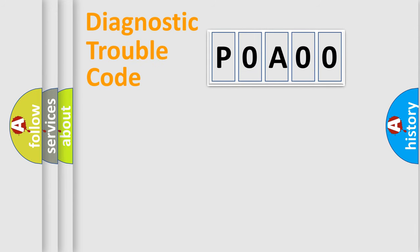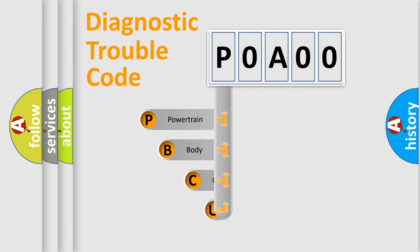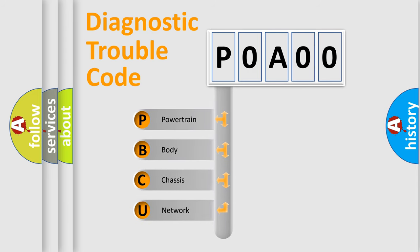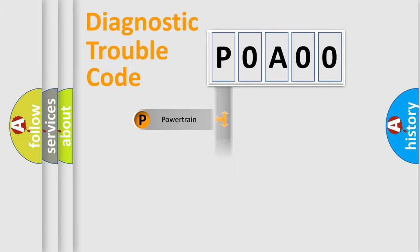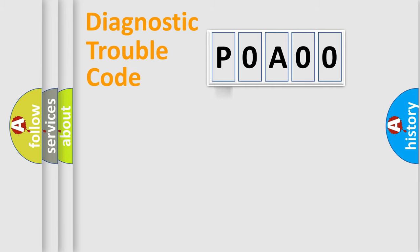First, let's look at the history of diagnostic fault code composition according to the OBD2 protocol, which is unified for all automakers since 2000. We divide the electric system of an automobile into four basic units: Powertrain, Body, Chassis, and Network. This distribution is defined in the first character of the code.